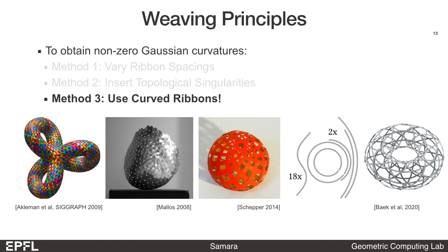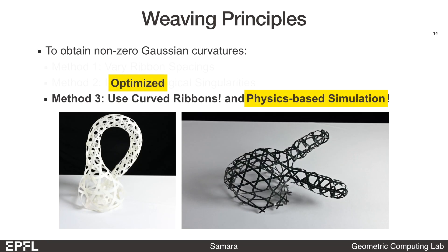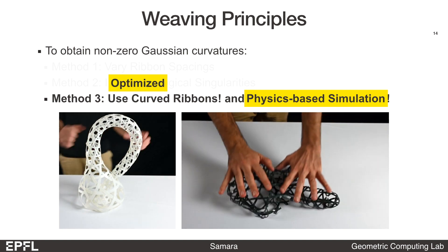One common component that's missing from these existing works is incorporating the physical behaviors of the ribbons into the design process. Weaving materials are often bending-active elements, and their elastic behaviors can have a significant and interesting impact on the equilibrium shape of the woven structure.